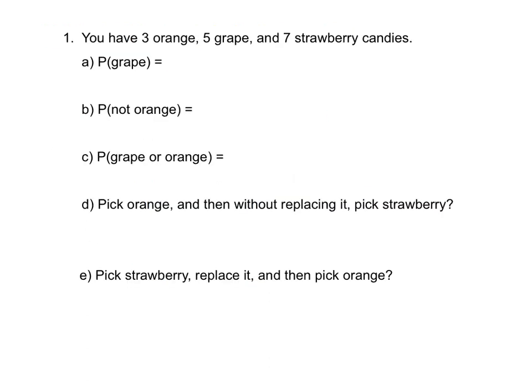Now that we've reviewed our formulas from 12.1, let's go ahead and look at an example. Suppose you have three orange, five grape, and seven strawberry candies. Go ahead and write that down in your notes. Anytime we're doing a probability question, you need the total. So if we go ahead and add three plus five plus seven, that's 15 total candies. The first part asks us what's the probability that we pick a grape candy? Well, the probability that we pick a grape is just the number of grape candies — five — divided by the total number of candies, so five over 15.